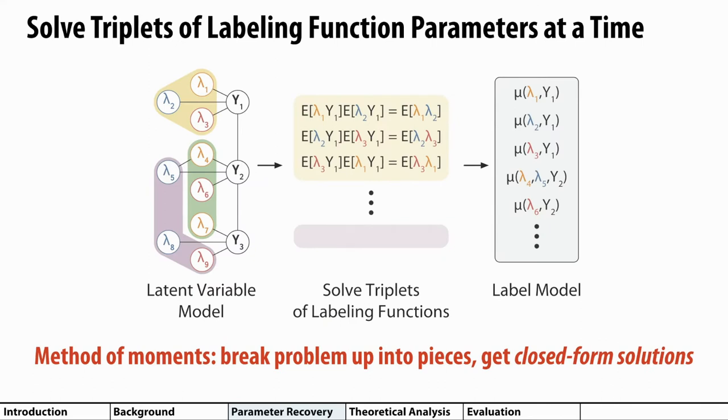In FlyingSquid, we use a family of techniques from the graphical modeling literature called methods of moments to break the parameter estimation problem down into smaller pieces that can be solved with closed form solutions. In particular, if we solve for parameters of triplets of conditionally independent labeling functions at a time, we can construct a system of equations with analytic solutions.